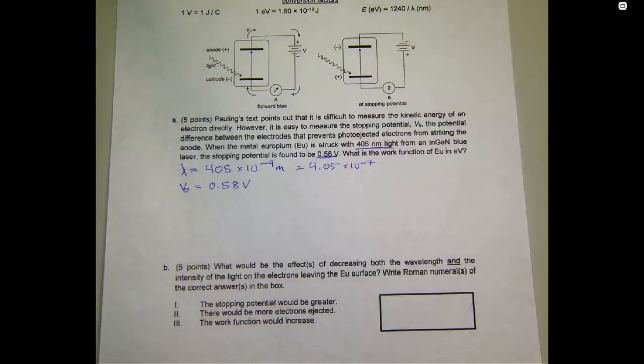So, I want to talk for a second about what that stopping potential actually is. The stopping potential is the potential at which we have to position this battery here, depicted in the circuit diagram, to grind our whole photoelectric effect circuit down to a halt. At the stopping potential, the energy of the battery is equal and opposite to the energy of the photoelectrons that are being ejected from the cathode material.